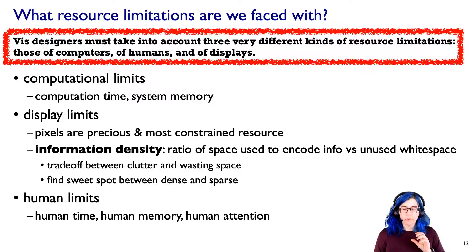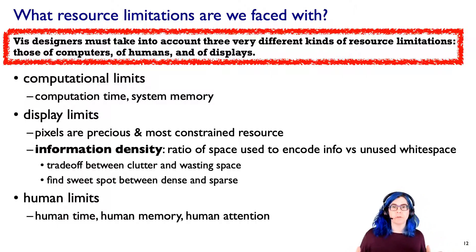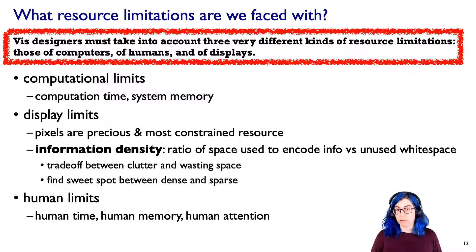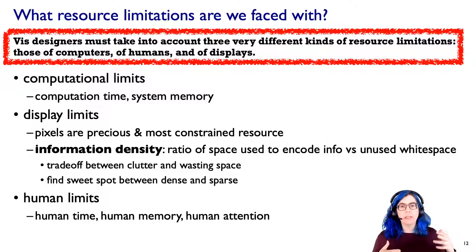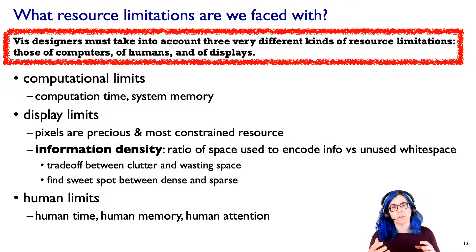But we can't stop there. We also have to think about the limits of a display. Pixels are extremely precious in visualization and are actually the most constrained resource. We often directly hit the wall when we run out of pixels to display what we want. A lot of what I discuss in the book is helping you through the thorny complexity of what happens when you run out of pixels — strategies to deal with the fact that you often have more data than you can show in a single screen. Information density is the ratio between space actively used to visually encode information versus unused white space.